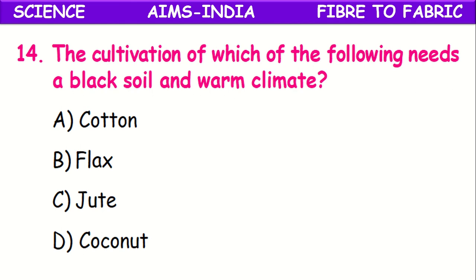The cultivation of which of the following needs black soil and a warm climate? For the cultivation of cotton, it needs black soil and warm climate.